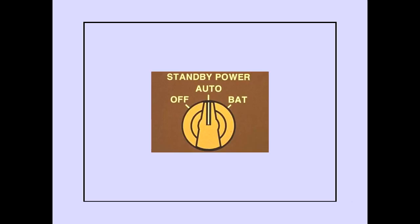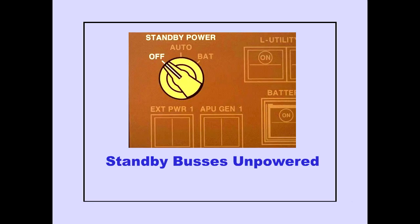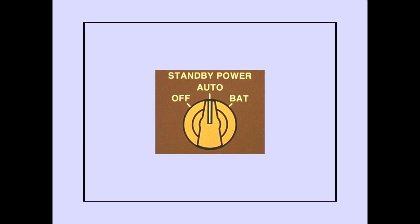A three-position standby power selector is located in the upper left corner of the electrical system panel. With the standby power selector off, both standby buses are unpowered. Rotating the standby power selector to auto allows the standby buses to be powered. Auto is the normal selector position for flight.